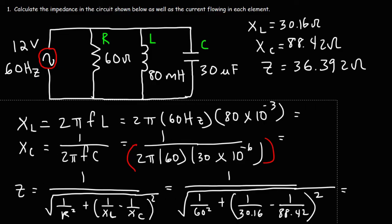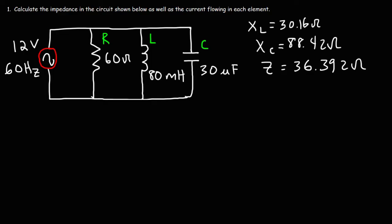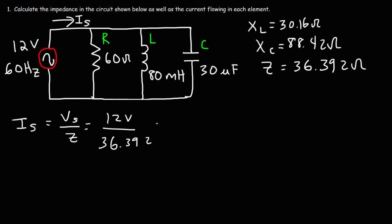Now let's move on and calculate the current flowing in each element. The current flowing into the circuit, IS, is going to be the source voltage divided by the impedance. The voltage of the source is 12 volts, and the impedance is 36.392 ohms. Dividing those two gives IS = 0.3297 amps.